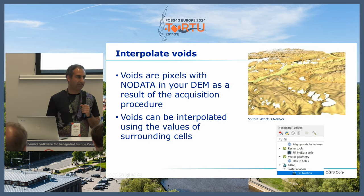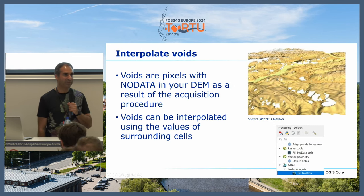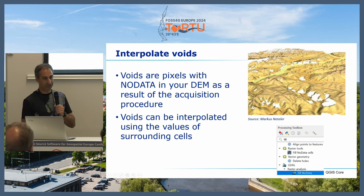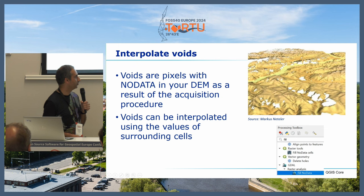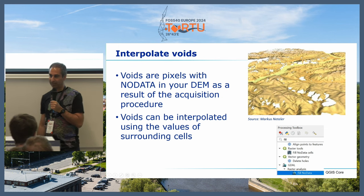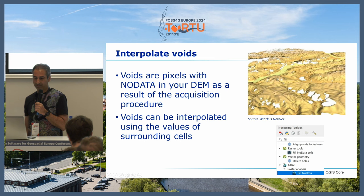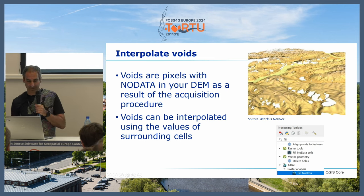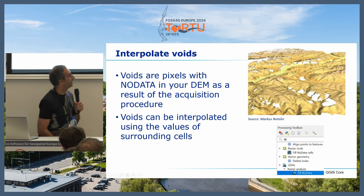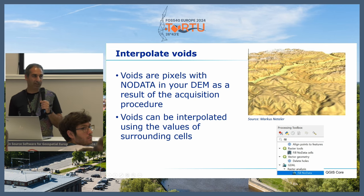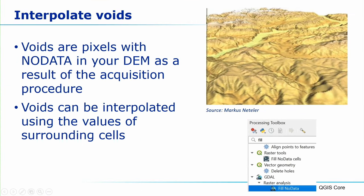You can also have voids — no-data pixels — and they need to be removed, otherwise you cannot do the rest of the procedure. There's a core GDAL tool: the Fill No Data tool. There are other fill no-data tools that do completely different things, so you really need this specific one. What it does is look at the surrounding elevation values, interpolate them, and give you a raster without voids.